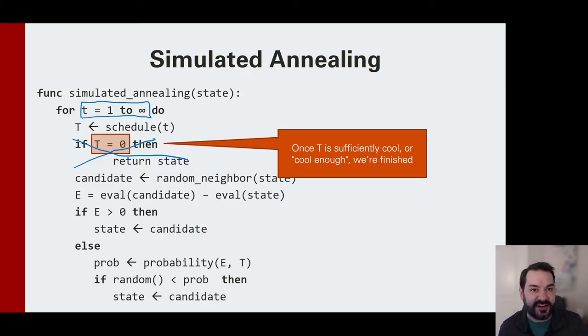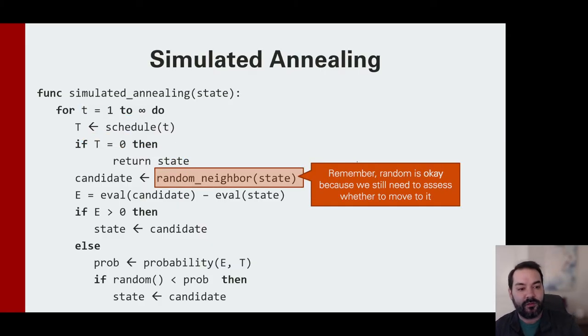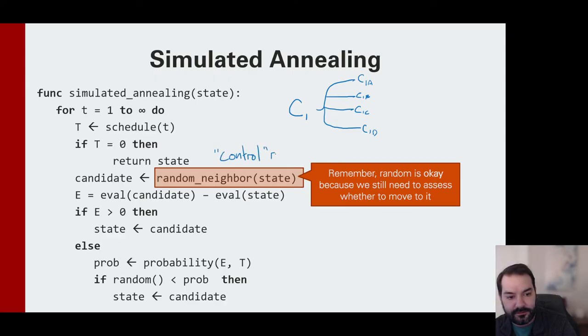What we're looking at is when we had some configuration, we're going to look at all of the possible steps that that configuration could do. C1A, C1B, C1C, C1D - these are all just possible steps that we could work off of. And specific to simulated annealing in that idea of controlling random, I just pick one. I'm not looking for the best, I'm not looking for the worst. I'm just going to pick one of them. For this case, this time around I pick C1B. That's it.